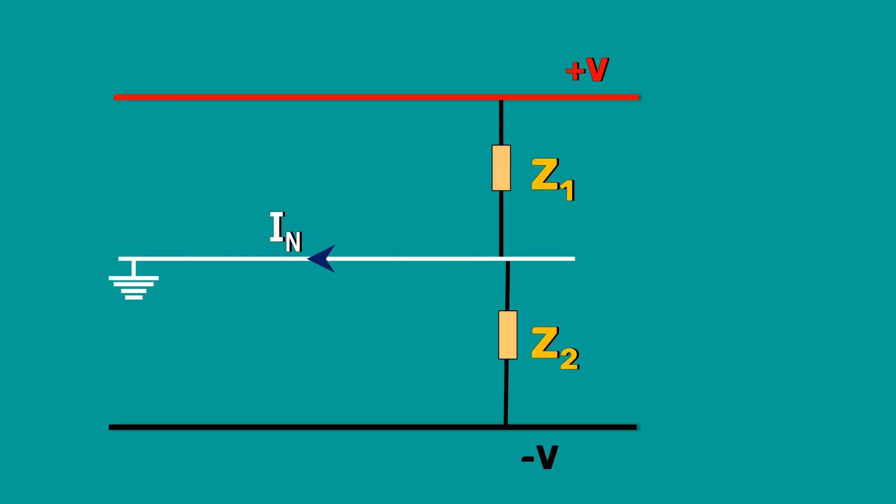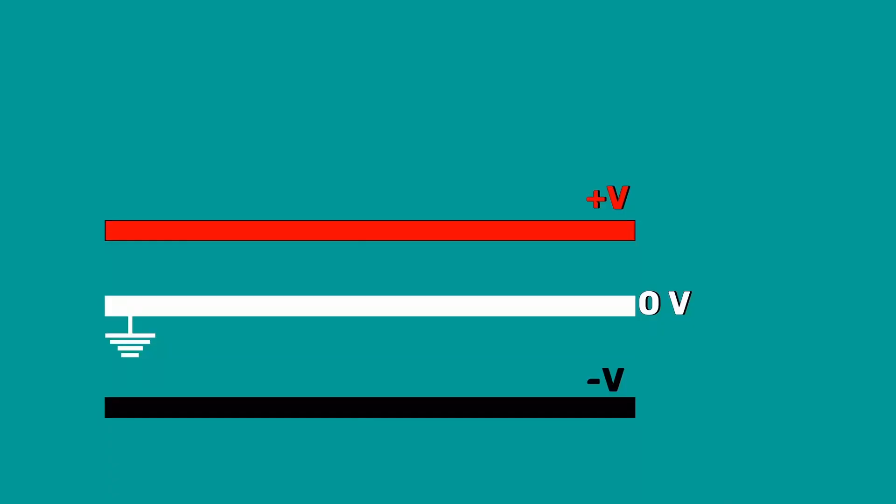If the loads on both sides of the neutral are not equal, then an out-of-balance current will flow in the neutral wire. The magnitude of this current will be very small as the neutral wire carries only this small current. The area of the cross section of the neutral wire is designed to be small compared to the other two.